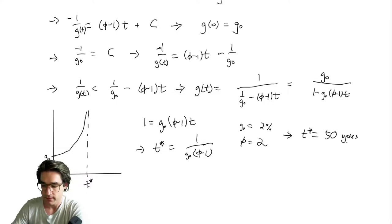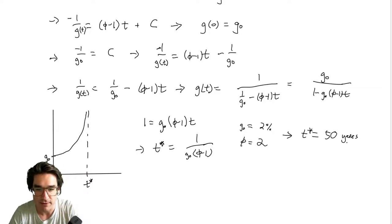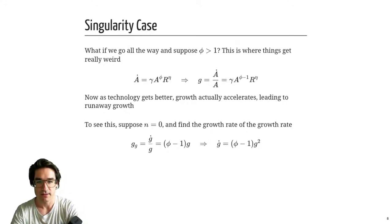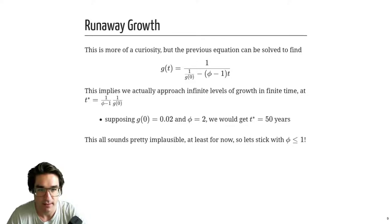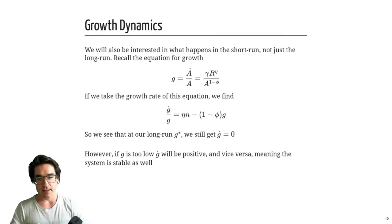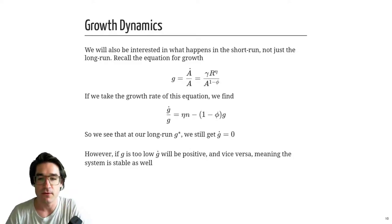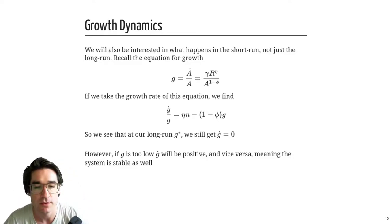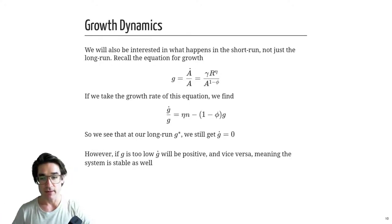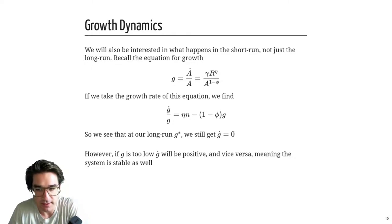So φ is the most important parameter in this whole thing — how does past technology help you improve technology in the future? It's not obvious what the answer is, but we're saying it's probably reasonable to go with φ < 1. That's the semi-endogenous growth framework, the Jones taxonomy. It's 'semi' endogenous because we still have the Solow-style assumption that you put a certain fixed fraction of people into research.